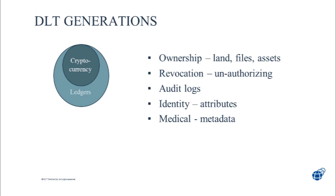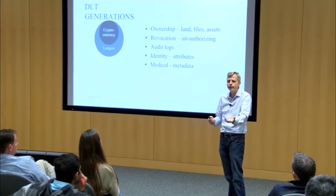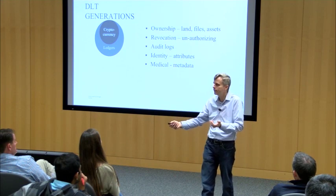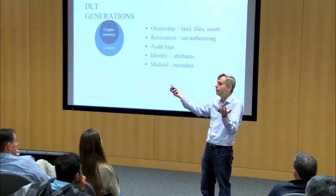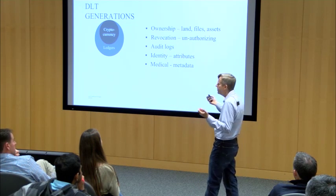You have to have some way to put transactions in order and agree on it — some kind of store of information we're all agreeing on, used to store cryptocurrency transactions. Then we realized it's just ones and zeros; we can store other things. The second generation is when we realized we can do more than money with these ledgers. We could store ownership rights of property, deeds to houses, identity — all sorts of things.